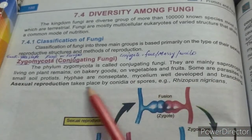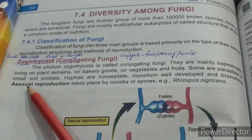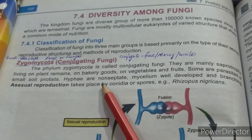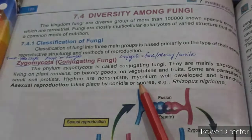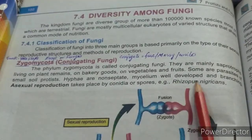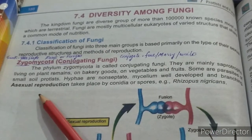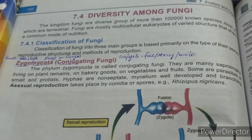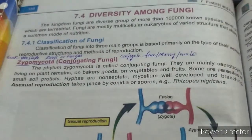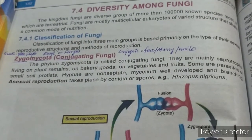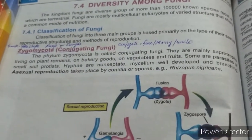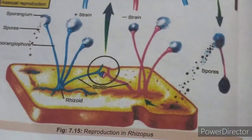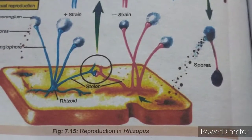Some are parasites, some are small soil protists. Their hyphae are non-septate, with a well-developed mycelium with branches. Asexual reproduction takes place by conidia and spores. Rhizopus is an example. Let's look at the reproduction in Rhizopus.